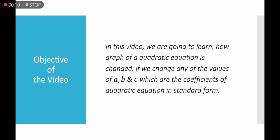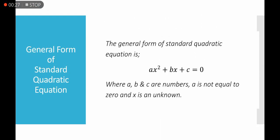In this video, we are going to learn how the graph of a quadratic equation is changed if we change any of the values of a, b, and c, which are the coefficients of a quadratic equation in standard form. The general form of the standard quadratic equation is ax² + bx + c = 0, where a, b, and c are numbers and a is not equal to 0.